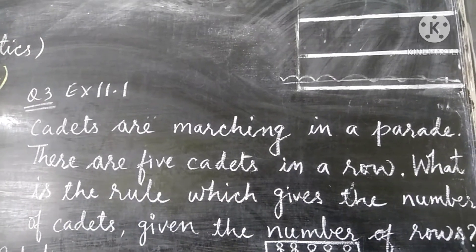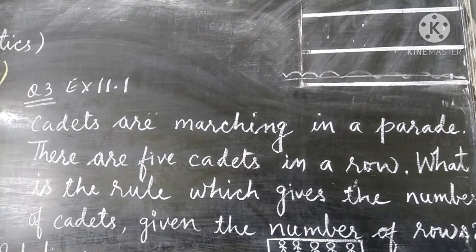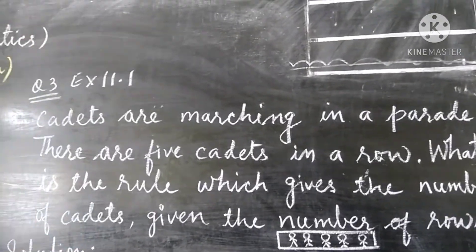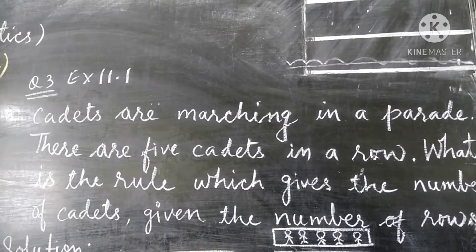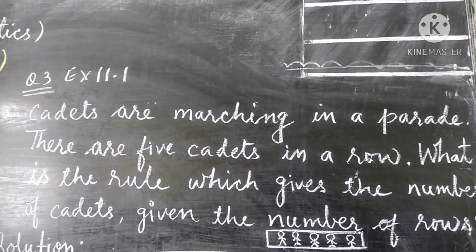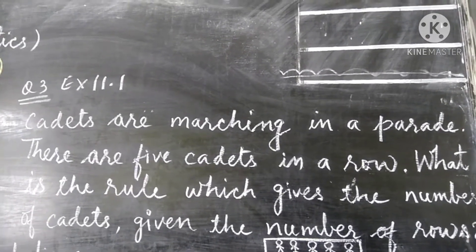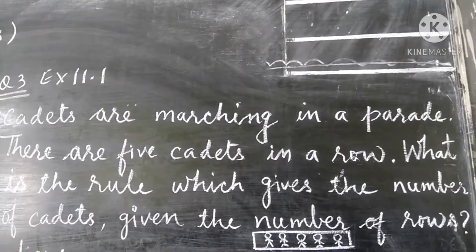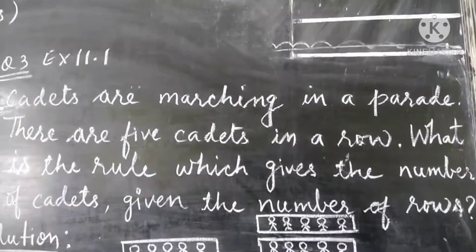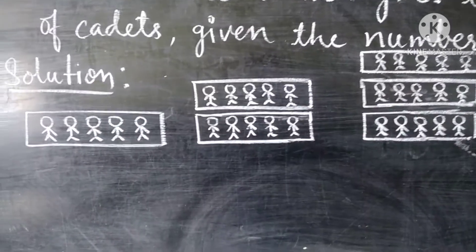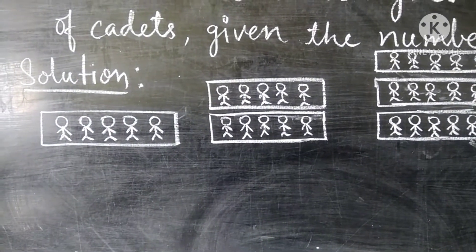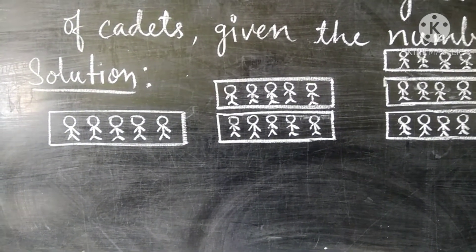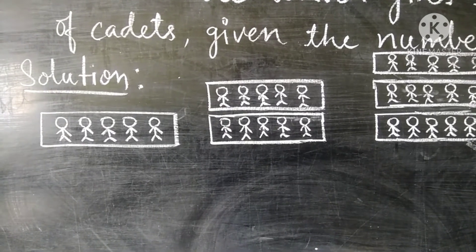Question number 3, Exercise 11.1. Cadets are marching in a parade. There are 5 cadets in a row. What is the rule which gives the number of cadets given the number of rows? Here I have drawn 1 row and in 1 row, 5 cadets are there.